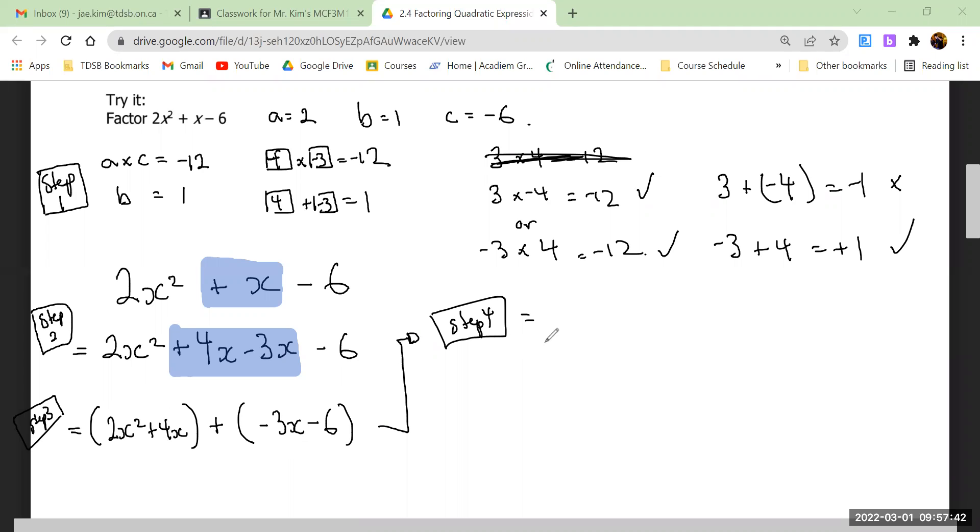Step four: common factor. What is common between 2 and 4? What is common between x squared and x? Can you common factor the first bracket for me? Alex? 2x. And an x. Can you also do the same for the second bracket?